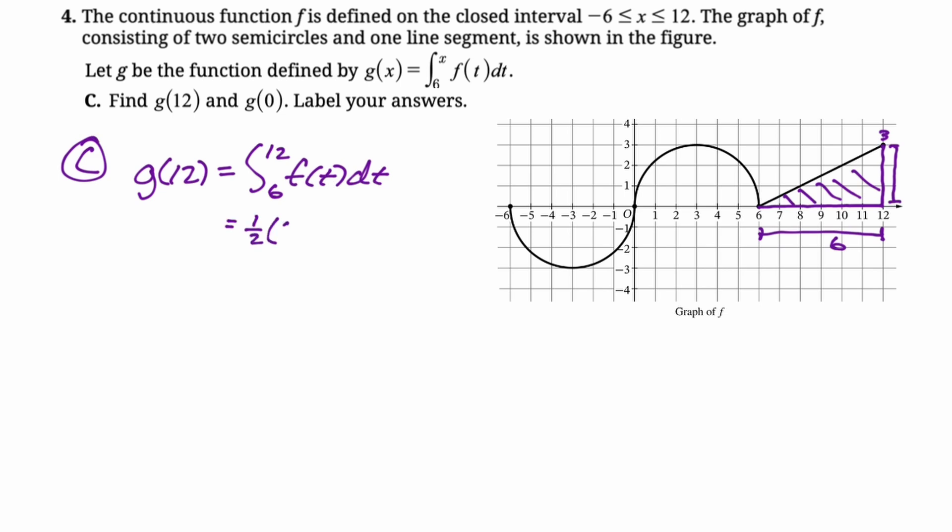So we get 1 half of 6 times 3, which you could leave, but that's just 18 divided by 2, so that's 9. And then g of 0. So g of 0, a little trickier I guess. I like to start by writing exactly what it is, right? It's the integral from 6 to 0 of f of t dt.